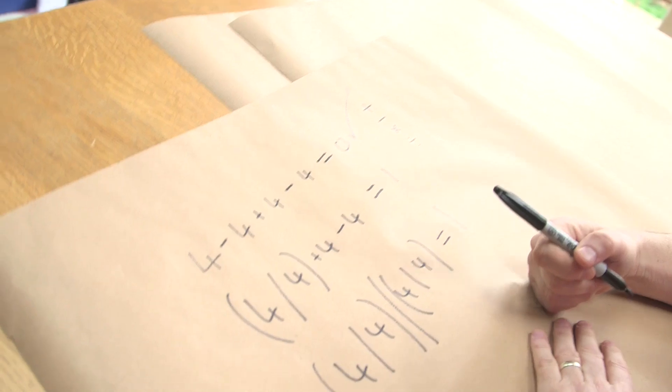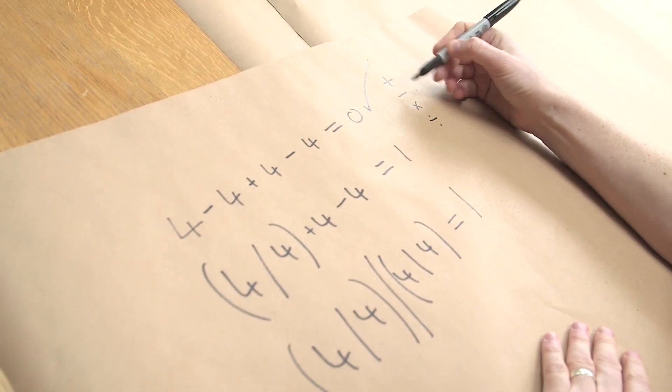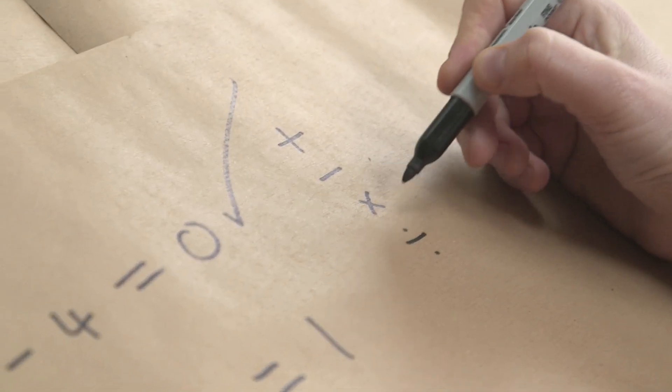So we need to clarify the operators first. We can get up to ten just with these: plus, minus, multiplication, and division.